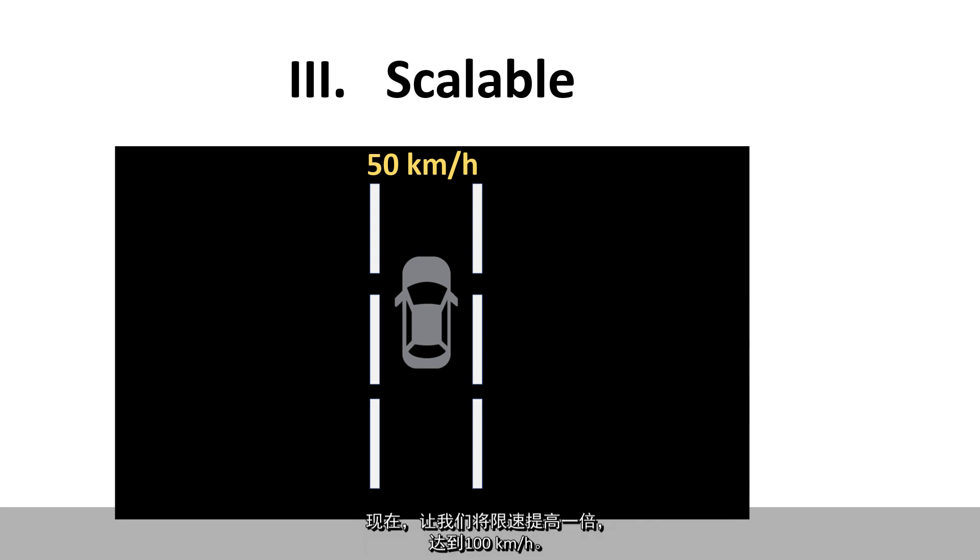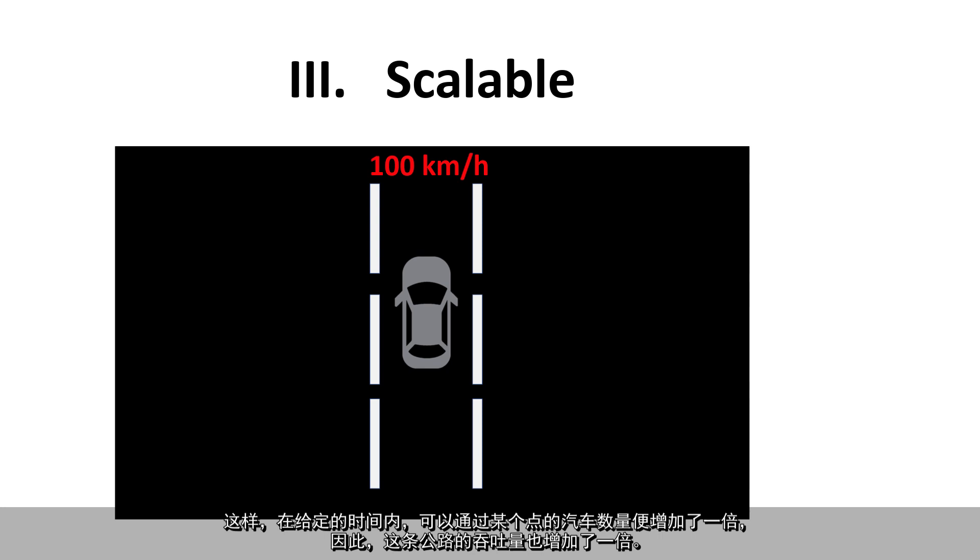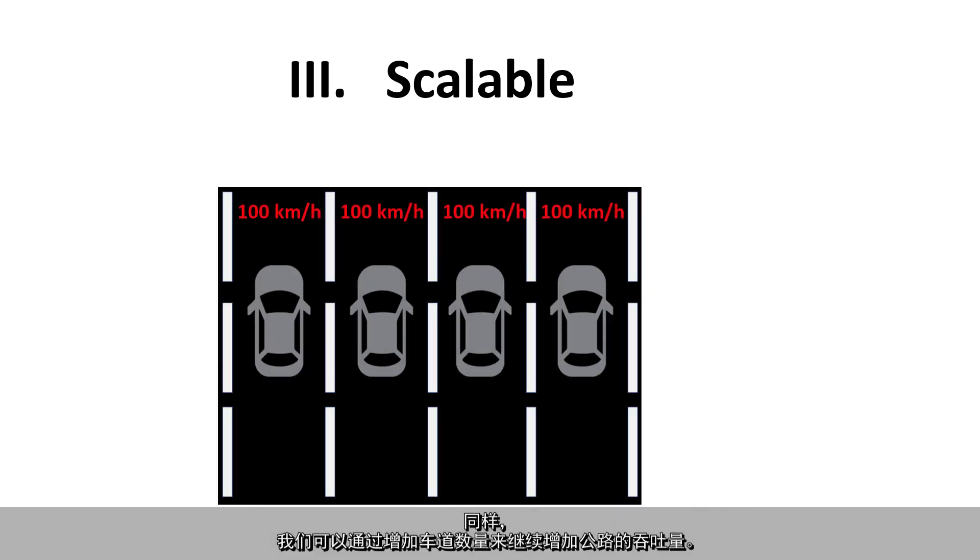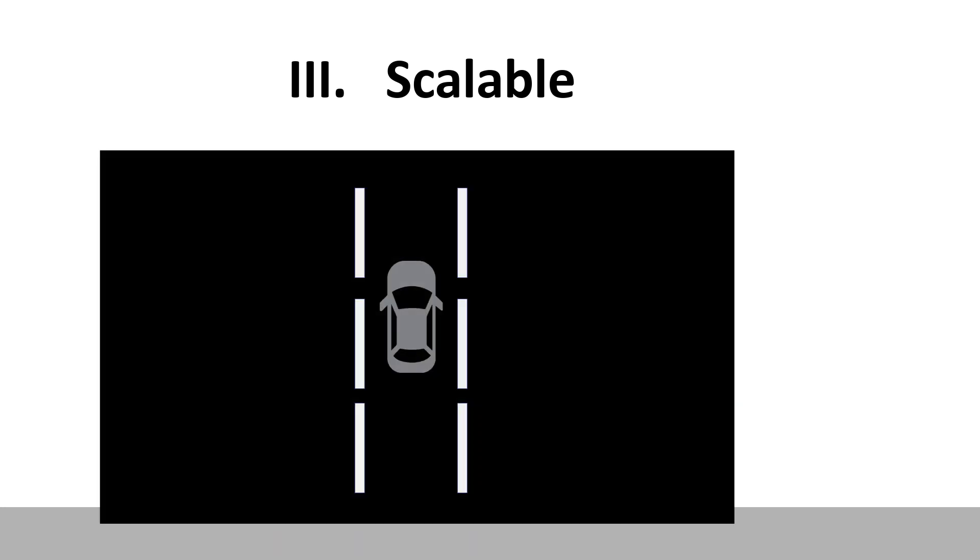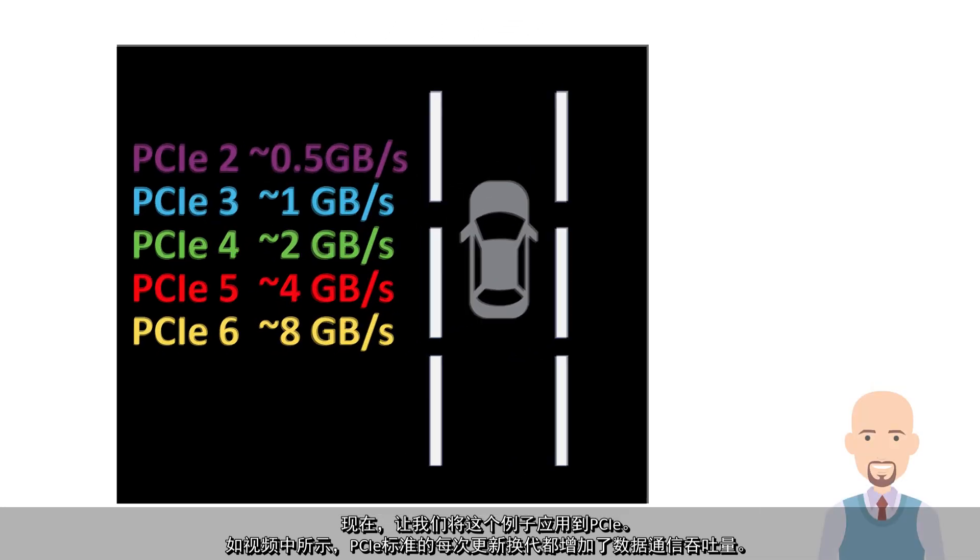Now let's double the speed limit of the road to 100 kilometers per hour. We have now doubled the number of cars that can pass through a point in a given amount of time. And therefore, we have doubled the throughput of that road. Similarly, we can continue to increase the throughput of that road by increasing the number of lanes.